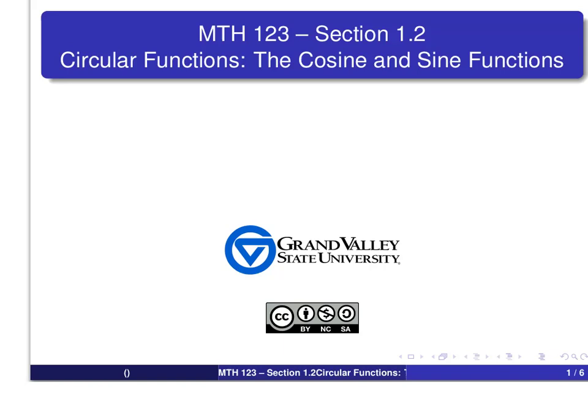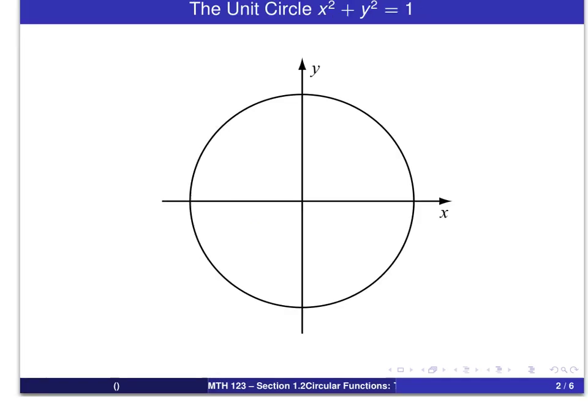The main thing we will use to make this definition is the so-called unit circle. We will place that circle with a center at the origin, and it has a radius of 1. Here's a picture of the unit circle, and up at top you see the equation for that unit circle.